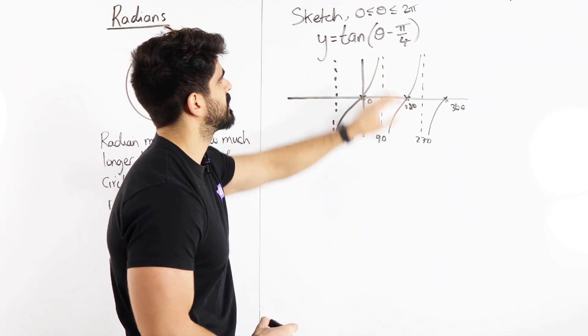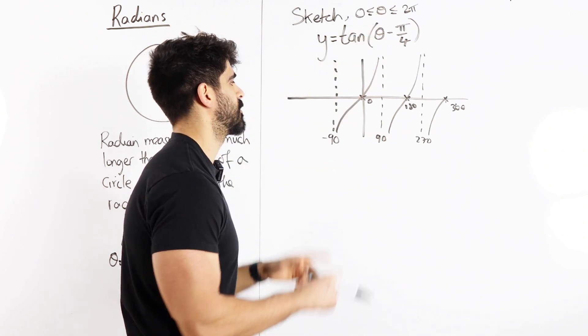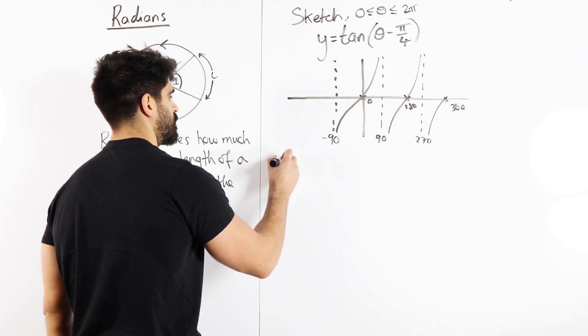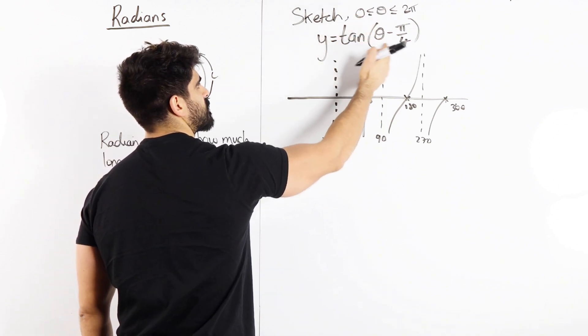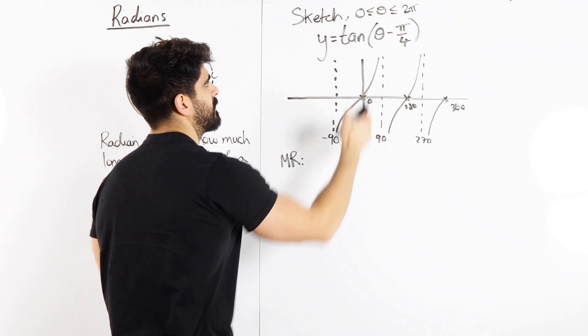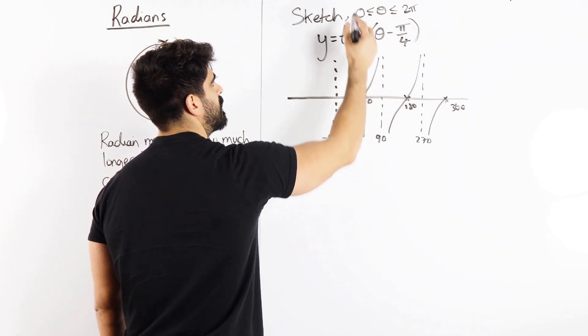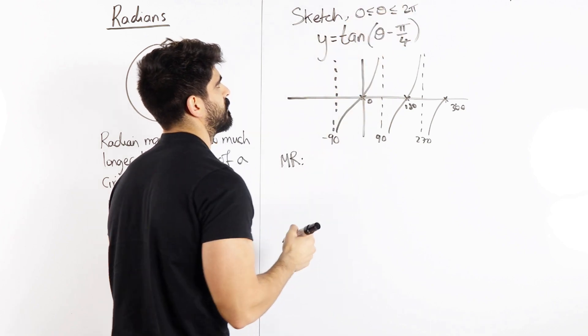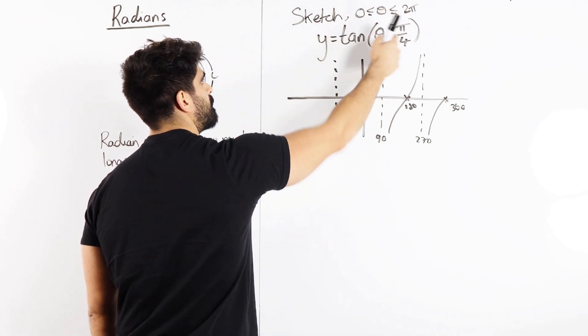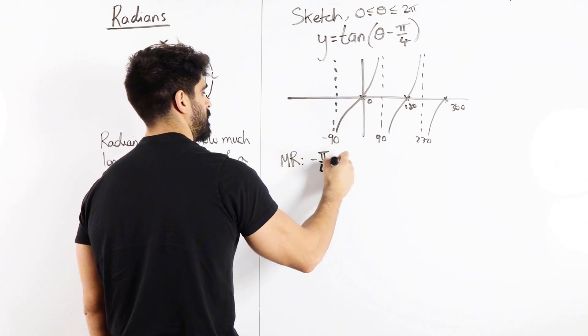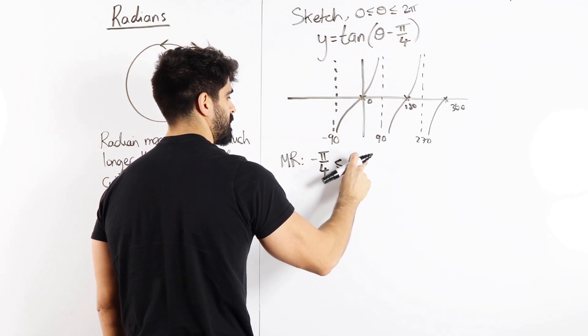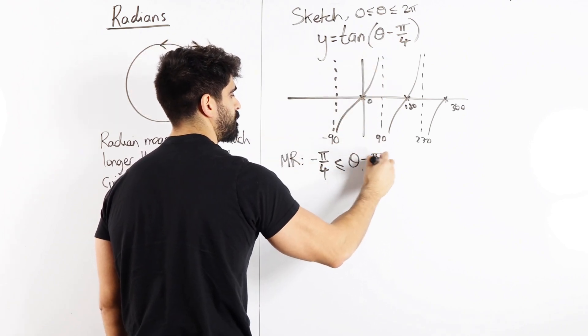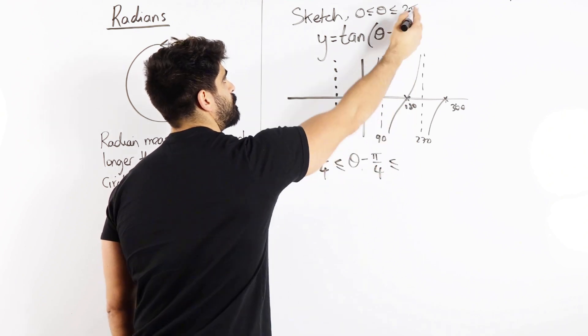So tan of theta minus pi over 4, the first issue here is that this angle is different to this one. So we're going to do something as modifying the range so that this angle reflects what we have here. So we want it to say theta minus pi over 4. So to all of these I'm going to minus pi over 4. So 0 minus pi over 4 is minus pi over 4. Then here I'm just minusing pi over 4. And 2 pi, when you minus pi over 4, so 2 minus a quarter is 3 quarters. So 7 pi over 4.